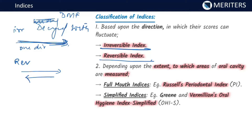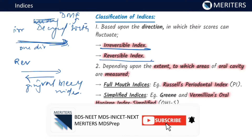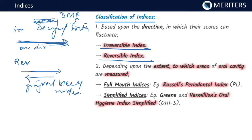A decayed tooth is permanent damage; it can only be restored and move into the filled compartment. So the DMFT index is a type of irreversible index. A reversible index is like the gingival bleeding index, wherein the gingiva can bleed, but with simple plaque control measures like scaling and oral hygiene the bleeding stops and can reverse. Depending on the extent to which areas of the oral cavity are measured, indices can be full mouth indices or simplified indices.